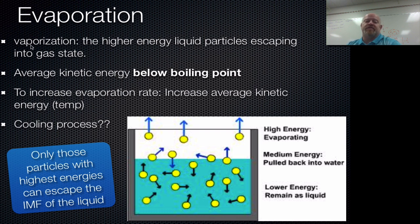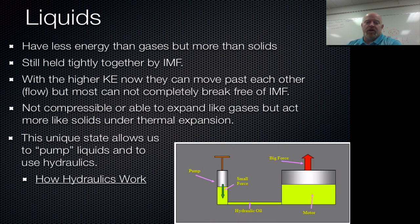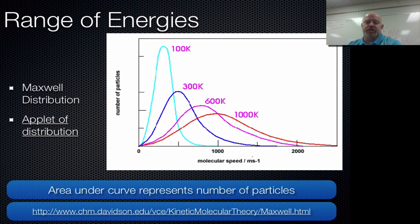When that happens, we call that process vaporization. What's going on is your higher energy liquid particles escape into a gaseous state. If we go back to our Maxwell distribution curves, we know that at any one temperature — say 300 Kelvin — we have some particles that are very cold and some that are very hot. So at any given temperature, there are always some particles way out on the tail that have enough energy to escape those intermolecular forces.